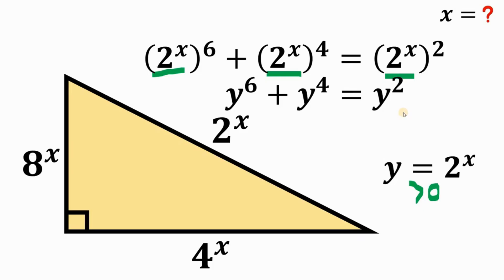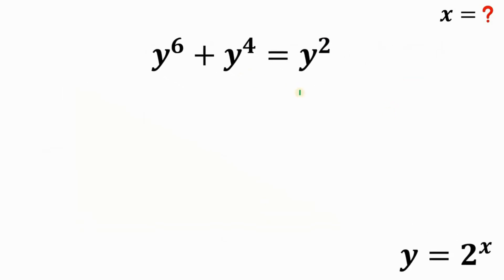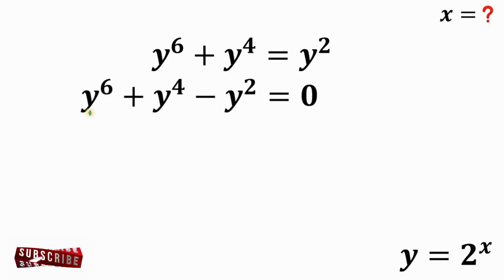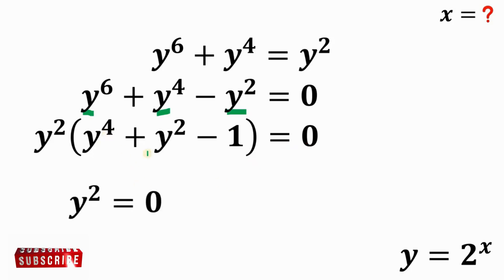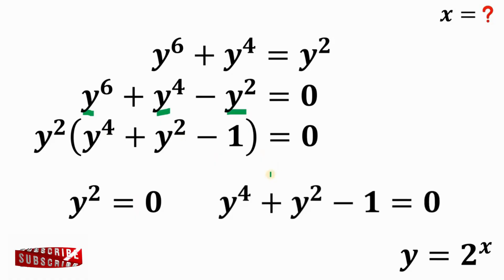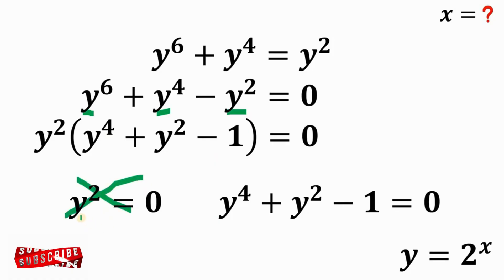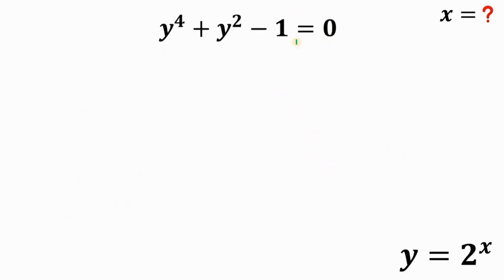Let's focus on this result. We equate it to 0, and we now have a common factor of y raised to the power of 2. Since it is equal to 0, we can use the zero-product property. So either y squared equals 0, or y squared minus 1 equals 0. Since y is greater than 0, y squared is also greater than 0, so y squared equals 0 is not possible. The only equation we need to solve is y squared minus 1 equals 0.